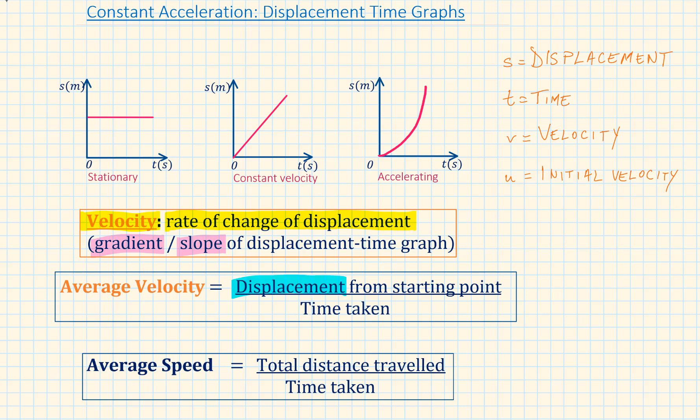The average velocity is equal to the displacement from the starting point, divided by the time taken. The average speed is calculated by the total distance travelled, divided by the time taken. We represent acceleration by a lowercase a.